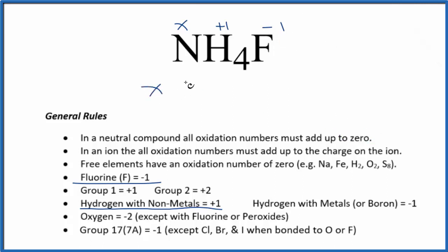So we could say X plus one, and we have four hydrogens, times four minus one equals zero. So X plus four minus one, X plus three equals zero. Subtract three from both sides. X equals minus three.